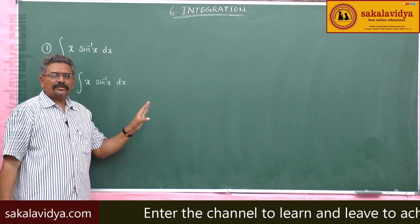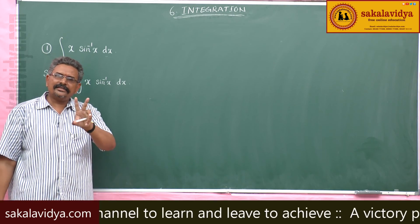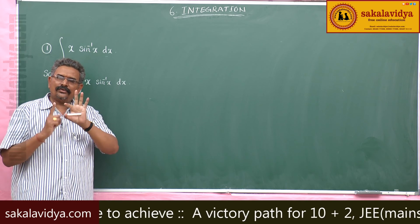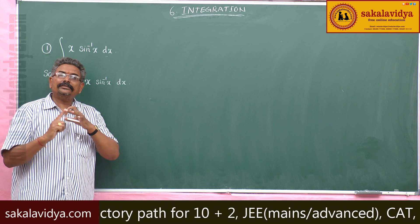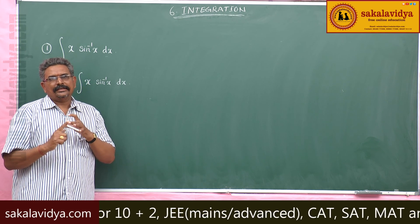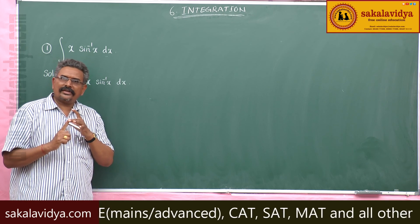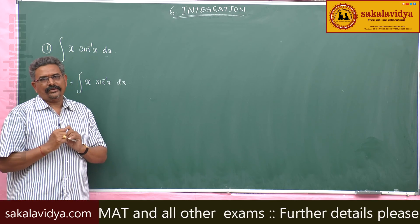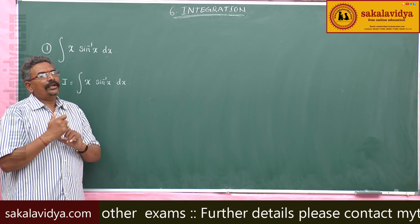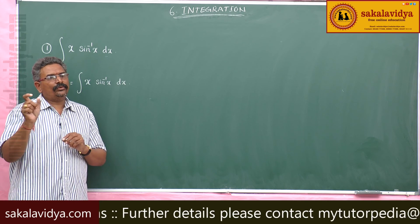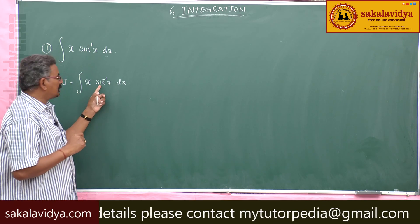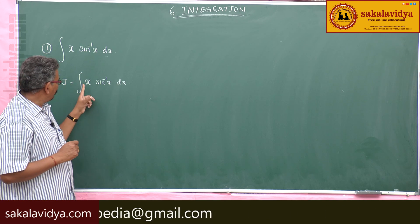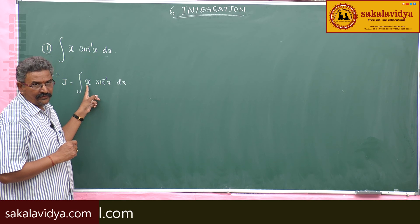Let us observe the integrand. The integrand consists of two functions: one is x and the other is sin⁻¹x. Sin⁻¹x is the inverse trigonometric function, whereas x is the algebraic function. We know the LIATE rule. As per the LIATE rule, the inverse function comes first, so sin⁻¹x should be taken as f(x), whereas x should be taken as g(x).